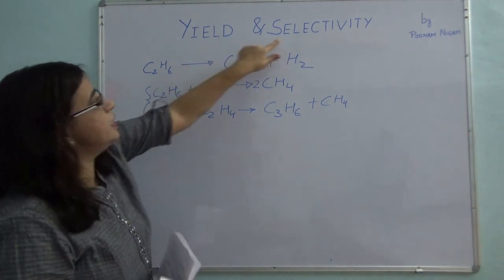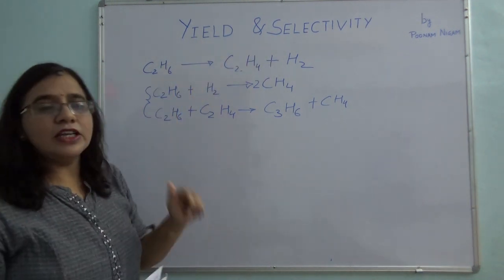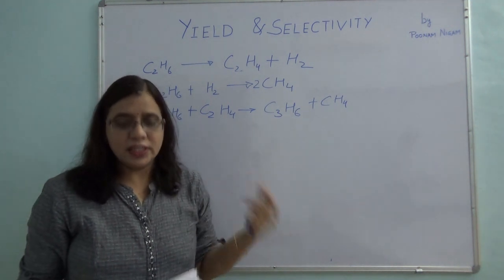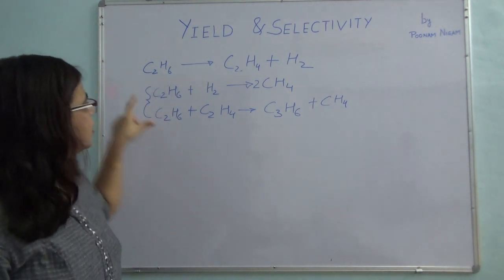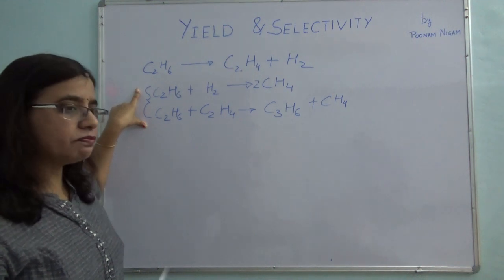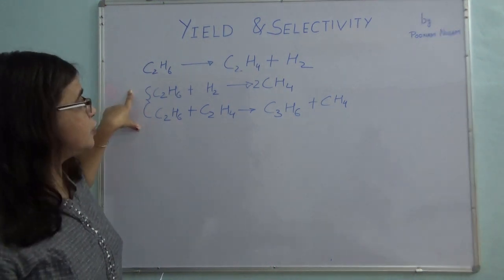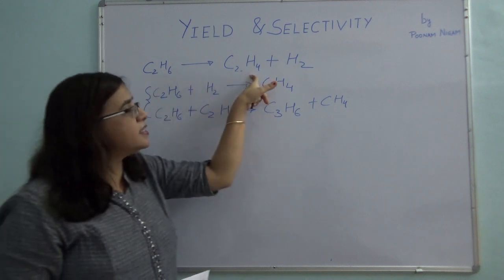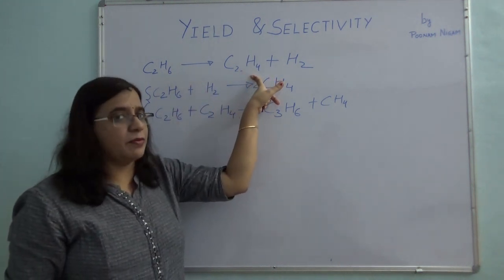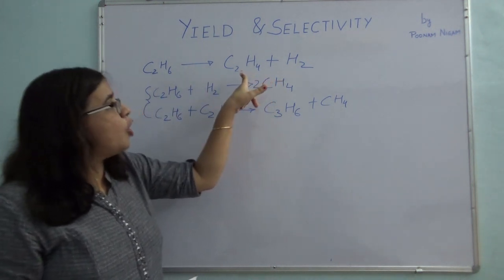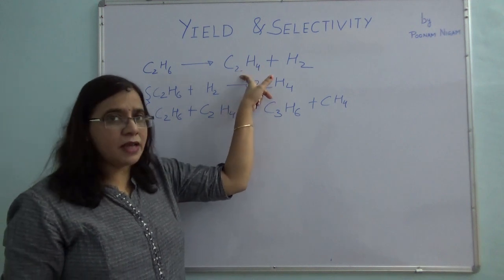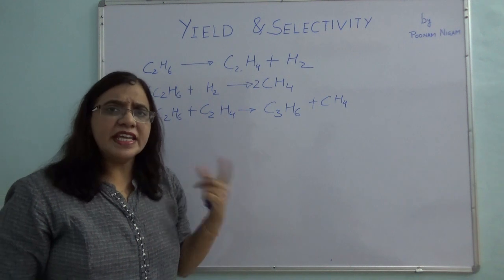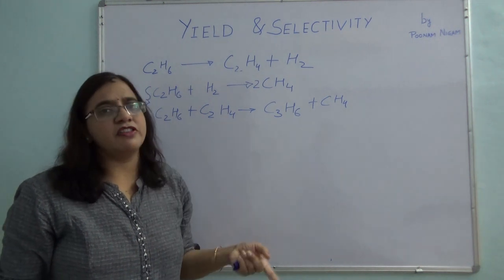We use selectivity and yield to tell you how much each reaction has progressed. The problem with side reactions is that if unwanted side reactions are taking place, less of your desired product will be formed. Or if you want to produce at the same level, you will have to use more of the reactants — that is loss of money.